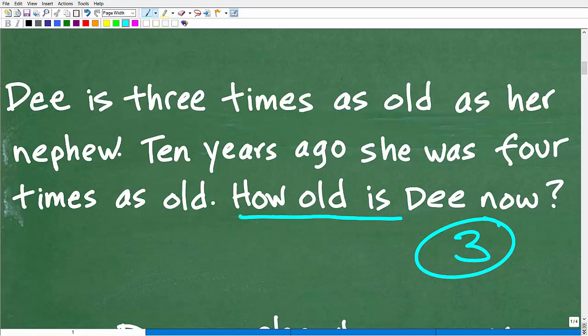We're looking for D's age right now. We're talking about D and her nephew, and we're talking about now, and we're also talking about ten years ago. So we need an approach. We need a strategy to solve this problem. We need to model this problem with some information or some sort of a visual way.